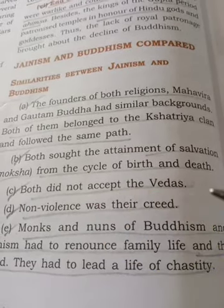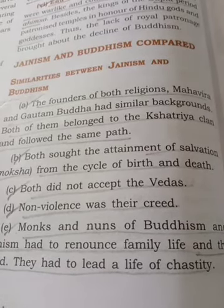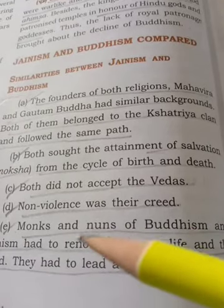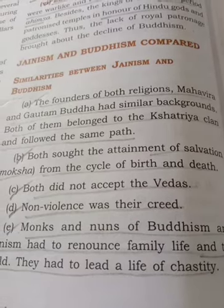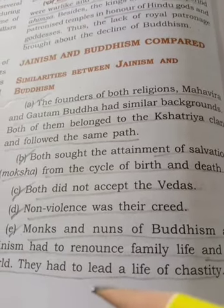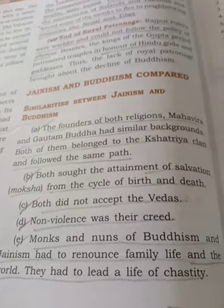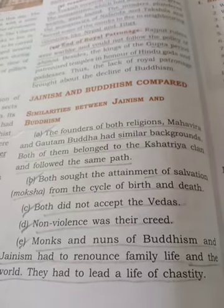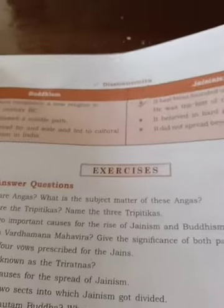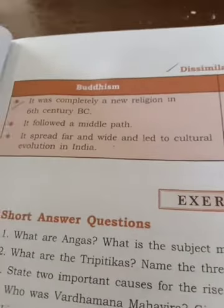Both religions did not accept the Vedas. No violence — Ahimsa — was their creed. The monks and nuns of both Buddhism and Jainism had to renounce family life and the world. They had to lead a life of chastity — they completely left their families and started to live like a sanyasi, going out in search of salvation and knowledge.